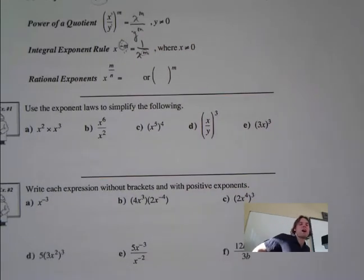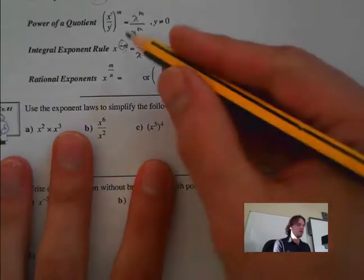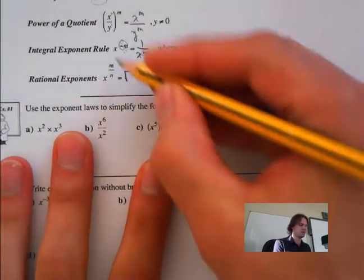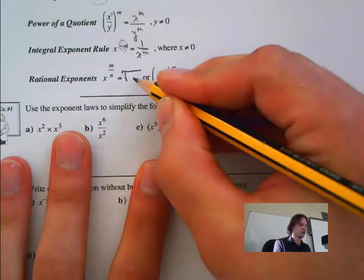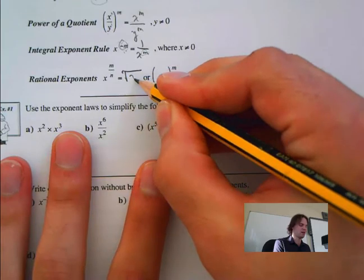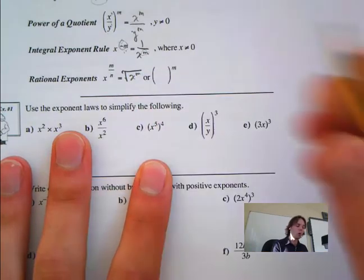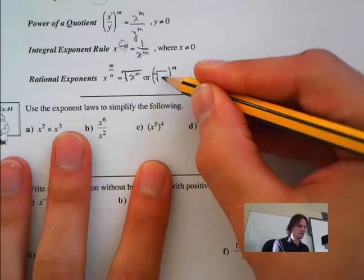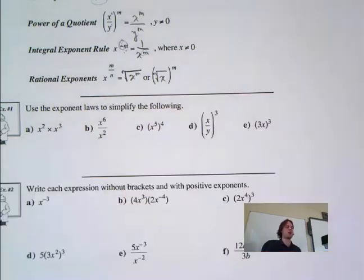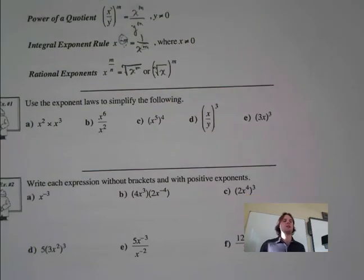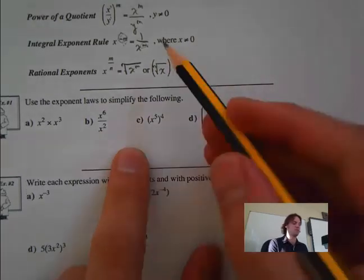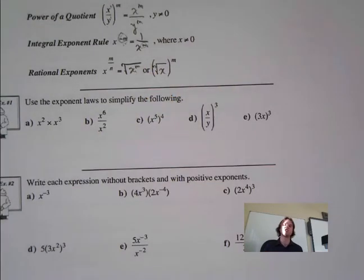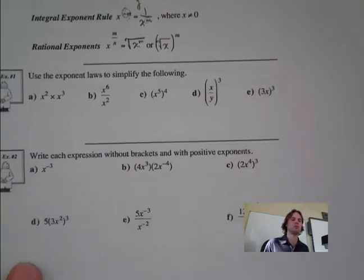Next is the rational exponents rule. We use a radical sign with n on the outside, giving us the nth root of x to the m. Or we write x to the power m over n — those are the two equivalent ways of writing it. Sometimes one form is better depending on what you want to do.